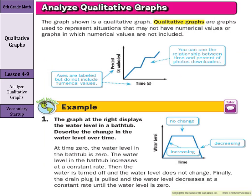Analyzing qualitative graphs: the graph shown is a qualitative graph. Qualitative graphs are graphs used to represent situations that may not have numerical values, or graphs in which numerical values are not included. The axes are labeled with time and percent downloaded, but there are no numerical values. But what you can see is the relationship between time and percent of photos downloaded — where the download was at a quick rate, where it leveled out, a quick rate, leveled out, and increased again.